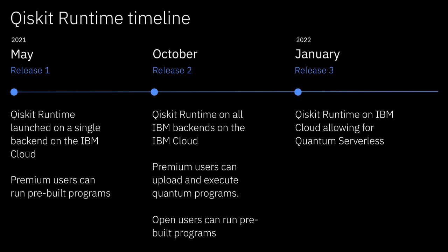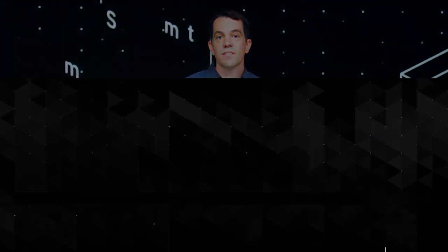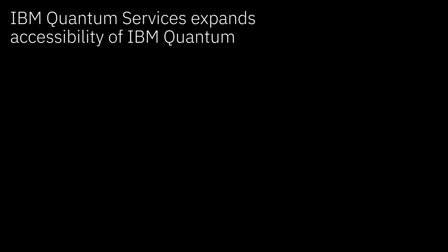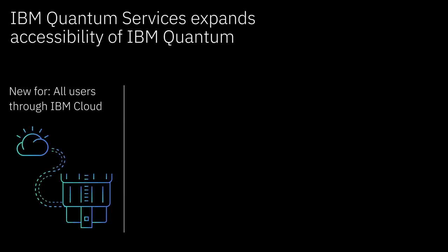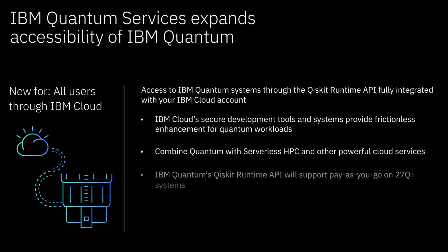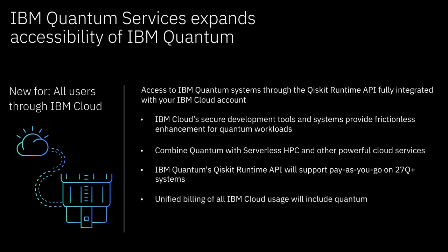To tell you about that, I'm going to throw it to Carl Waiten, our Program Director for IBM Quantum Cloud Services. I'm Carl Waiten, Program Director for the IBM Quantum Cloud. I'm here to talk about quantum as a service and the work we're doing in this area. IBM Quantum Services is starting to expand the accessibility of quantum overall, and we're starting that journey with IBM Cloud, which offers a great combination of core technologies like data management, AI services, serverless HPC, and the limitless capacity of the cloud.